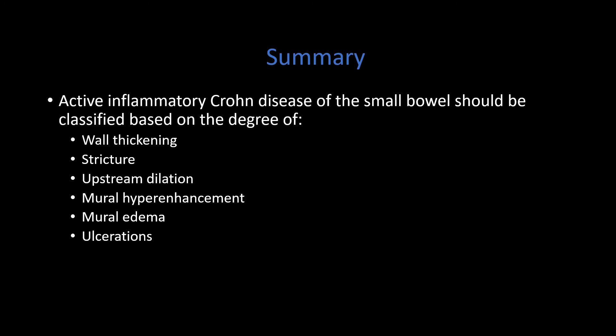In summary, active inflammatory Crohn's disease of the bowel should be classified based on: the degree of wall thickening; the length and location of any stricture and the degree of upstream dilation; the degree of mural hyper-enhancement and mural edema; and whether or not there are ulcerations or sacculations. Thank you for your time — this is part one in a three-part series on Crohn's disease, and I hope you join us for the other parts.